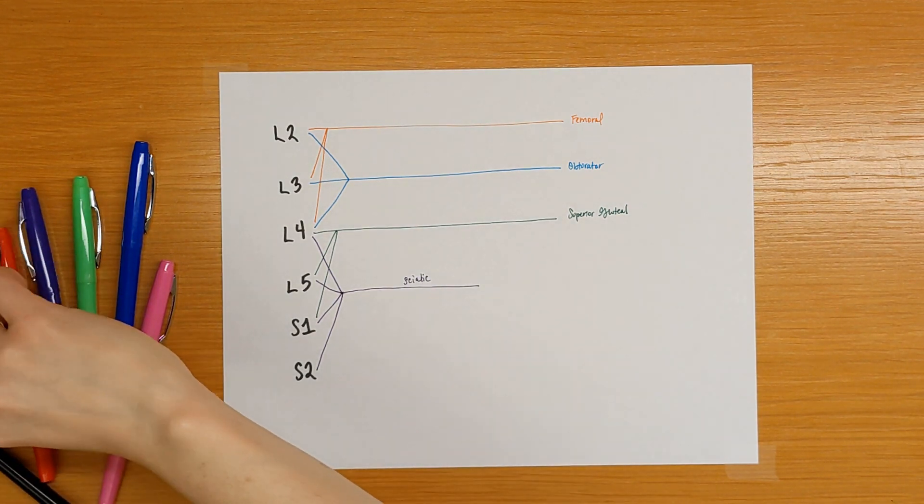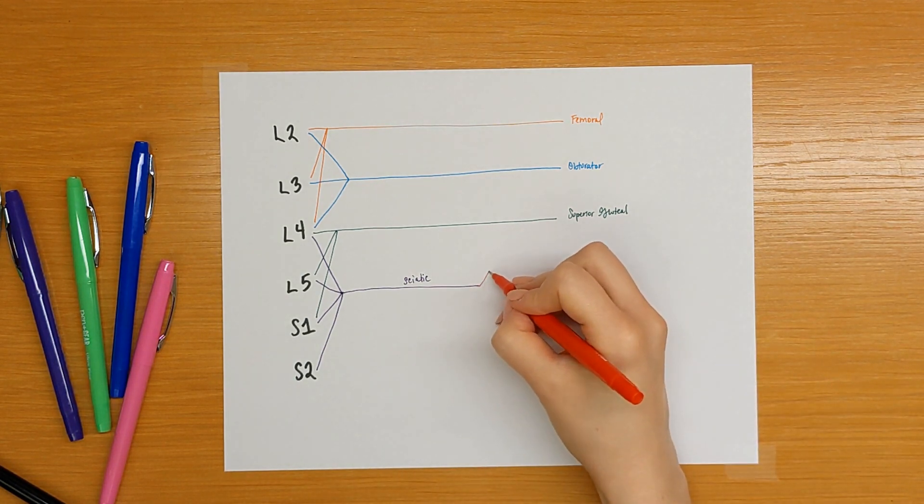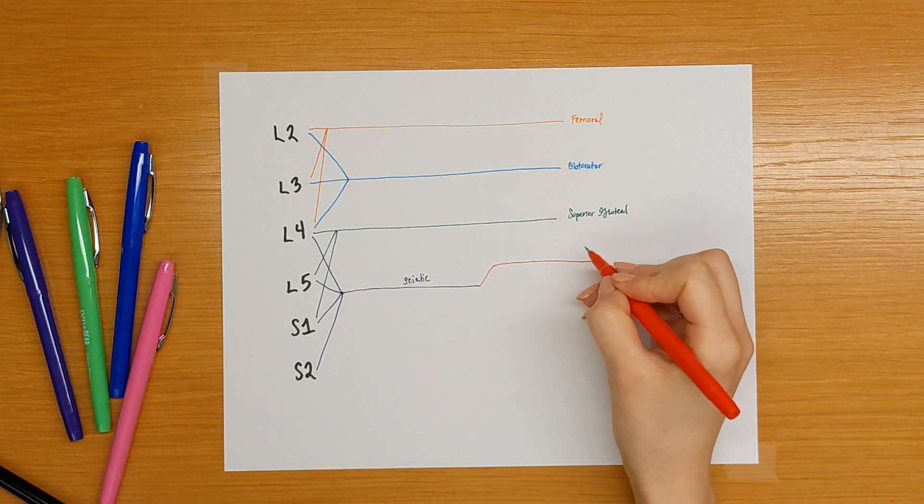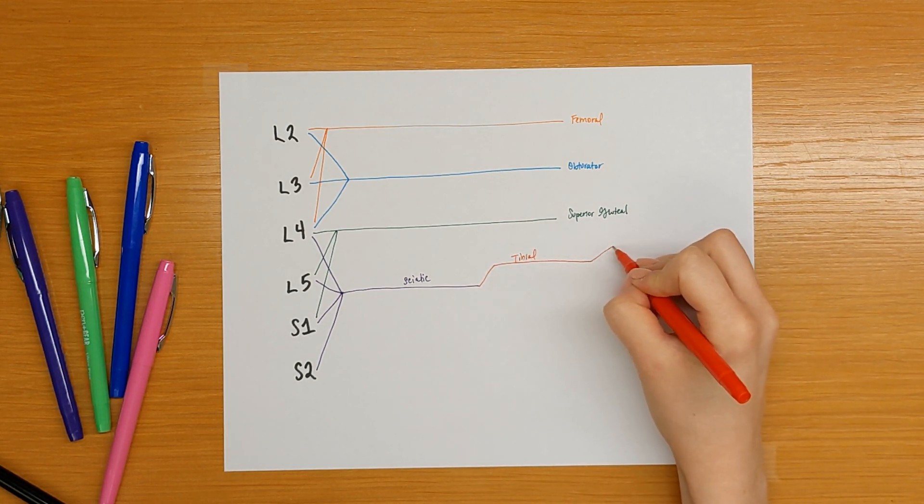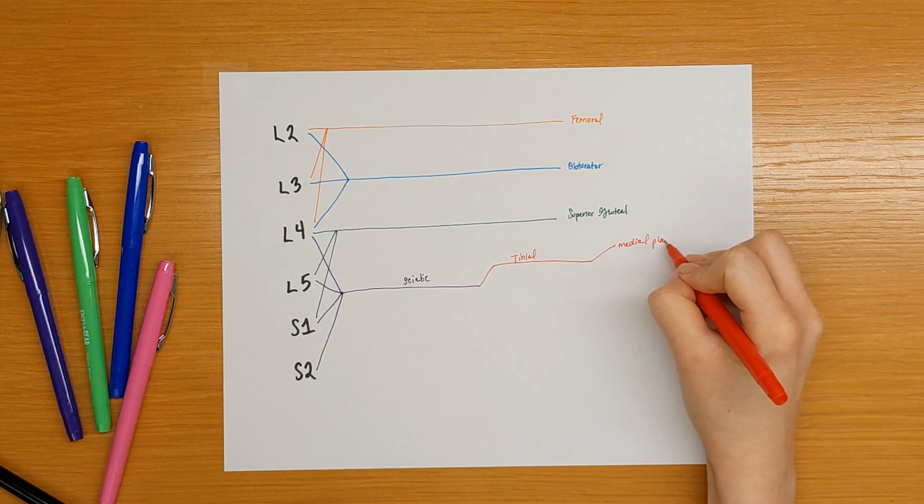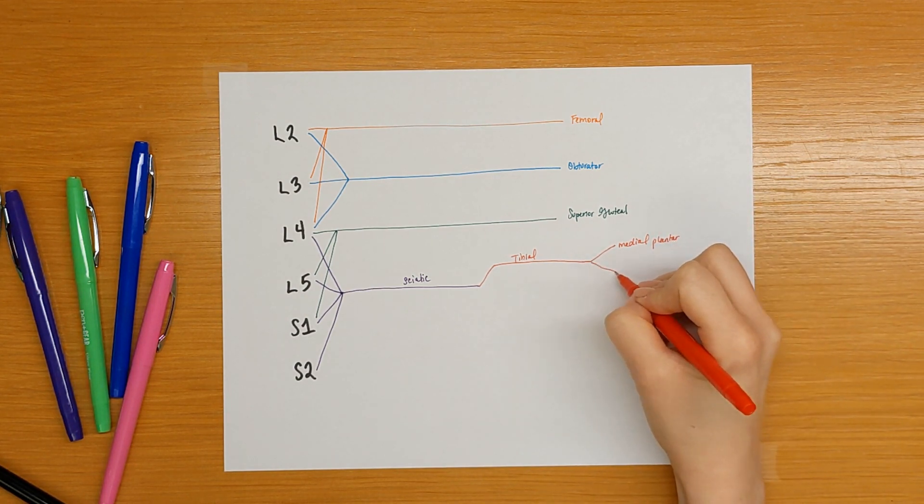Our sciatic nerve is actually two nerves in one, our tibial nerve which branches into the medial plantar and the lateral plantar.